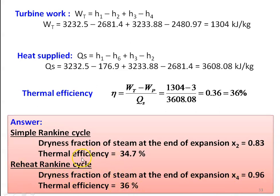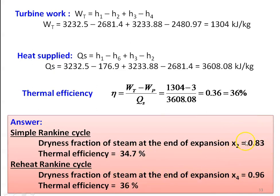We observe that the thermal efficiency of the reheat cycle is increasing and the dryness fraction — quality of the steam — is also increasing. These are all the advantages of the reheat cycle: thermal efficiency increases and the quality of steam at the exhaust is also increasing.